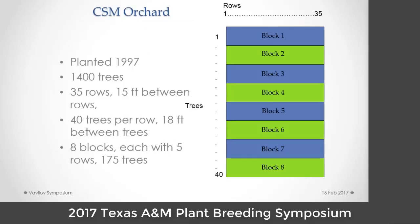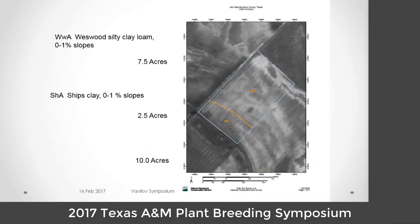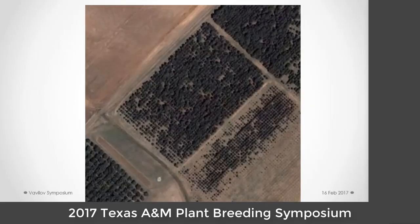I have another provenance orchard from a serendipity deal. In 1994, Tommy judged a native pecan show in Mexico and asked if he could have the entries. So instead of going laboriously across populations in Mexico, we just took those collected nuts with their entry-level information. We planted them out in a greenhouse and planted an orchard in 1997 that represents 1,400 trees in eight blocks. Those blocks cross a site on a Westwood silty clay loam down to a Ships clay. From the air, you can see that trees in the Ships clay are smaller with gaps between them.